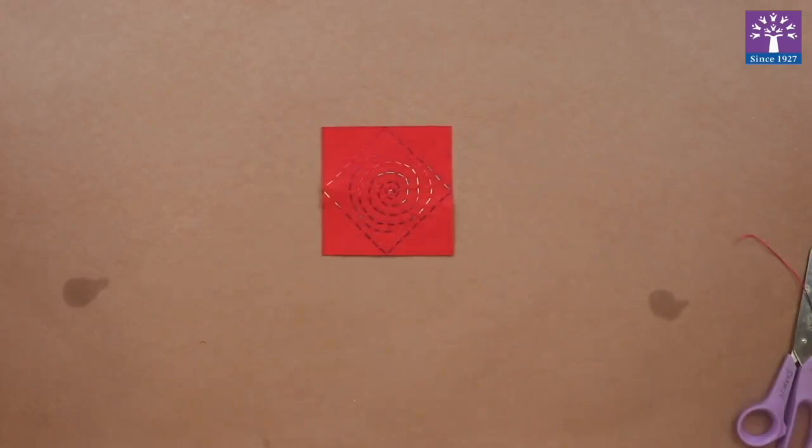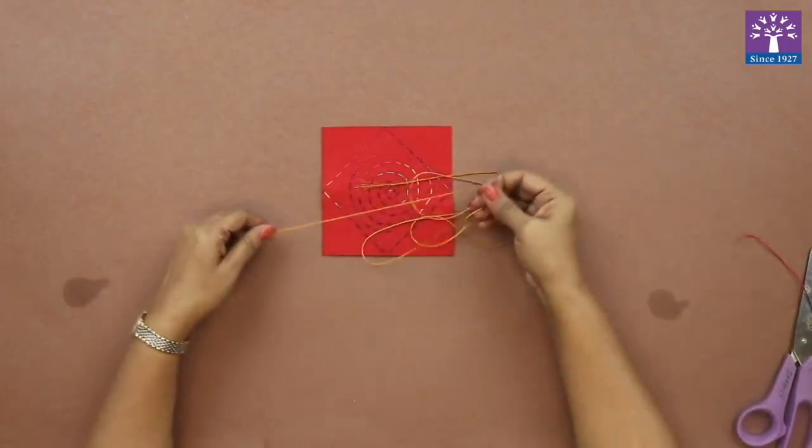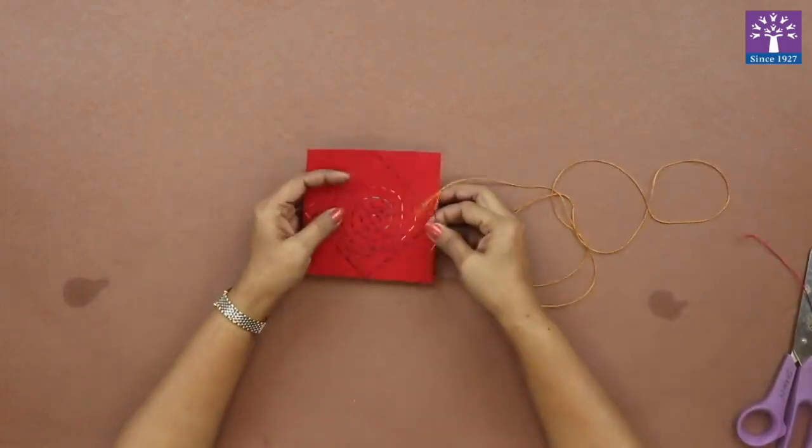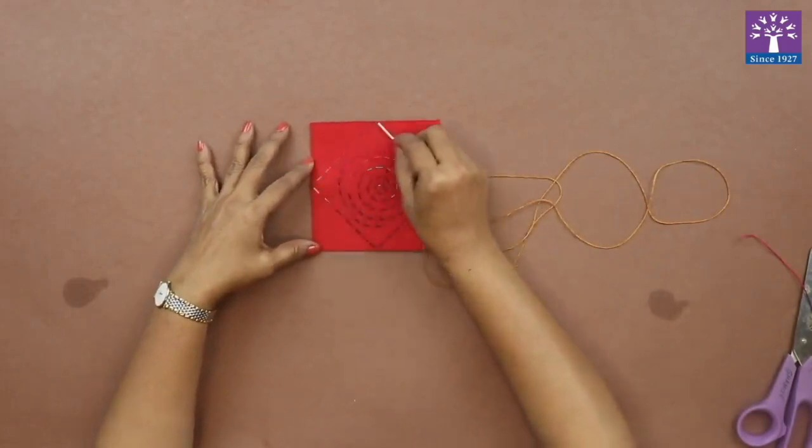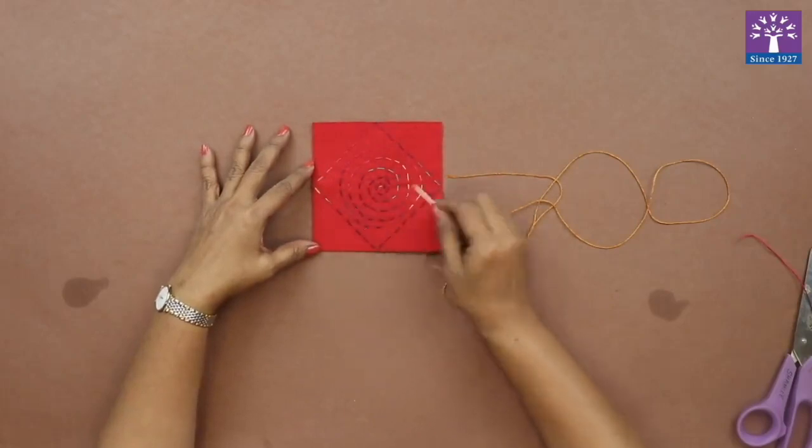Now we will start with the overlapping stitch. We are going to take a golden color thread. We are doing the overlapping stitch only on the square, the outside square not on the circle.